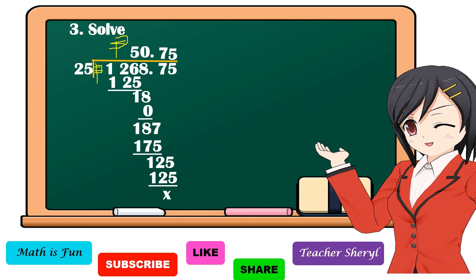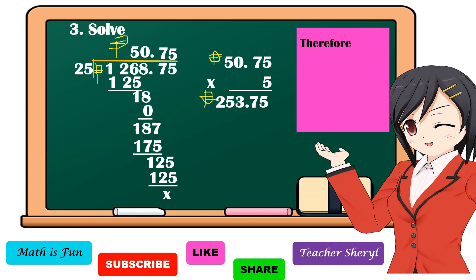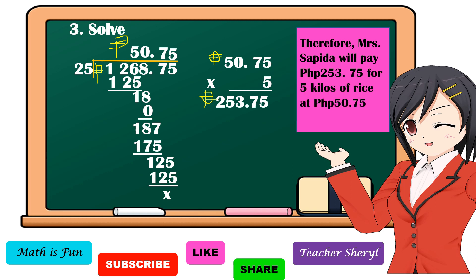Since Mrs. Sapida will buy 5 kilos, we're going to multiply 50 pesos and 75 centavos by 5. The product is 253 pesos and 75 centavos. Therefore, Mrs. Sapida will pay 253 pesos and 75 centavos for 5 kilos of rice at 50 pesos and 75 centavos per kilo.